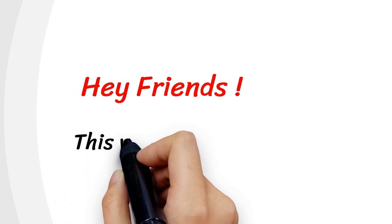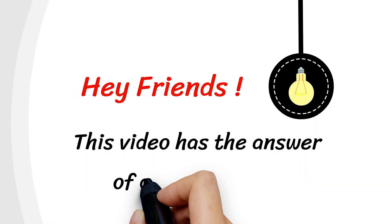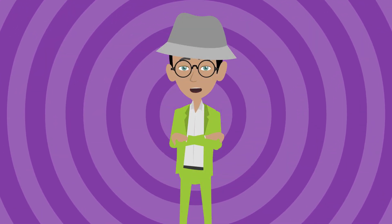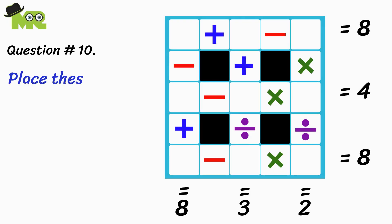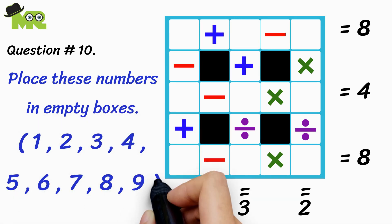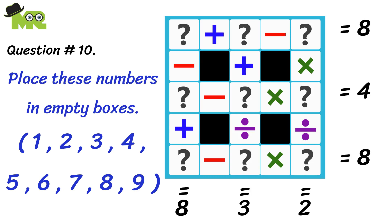Hey friends, it's Mr. Animate here with an answer for question number 10. Friends, in video 10 we asked you can you place the numbers 1, 2, 3, 4, 5, 6, 7, 8, and 9 into these 9 empty boxes in a way that your answer could be equal to the target values?